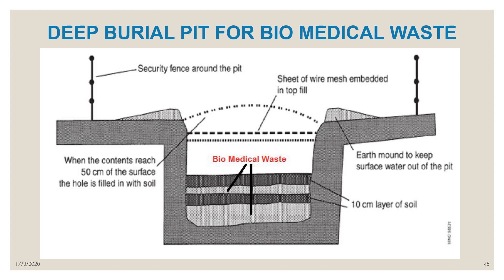The pit should have a 50 cm surface fill of soil on top. There must be a minimum of 10 meters distance between the walking space and the pit, with an earth mound to keep surface water out. Waste is layered with incinerated waste, then soil, alternating layers, with a wire mesh embedded in the top fill, and a security fence to prevent animals and humans from entering or disturbing the waste.